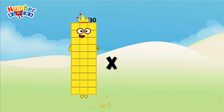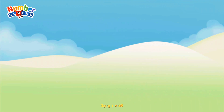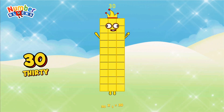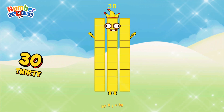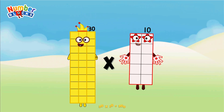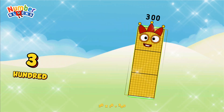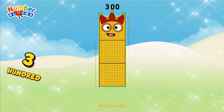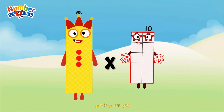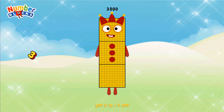Thirty multiplied by one equals thirty. Thirty multiplied by ten equals three hundred. Three hundred multiplied by ten equals three thousand.